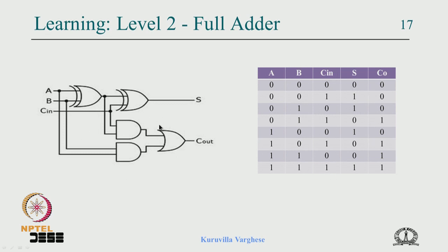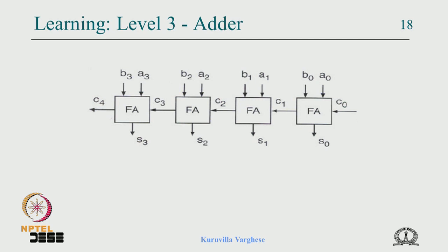At level 2, knowing the gates, you move to the full adder. The full adder has three inputs — A, B, and carry-in from a previous stage — and gives a sum and carry-out for the next stage. It is a modular adder slice that can be combined to form bigger adders. You work out the truth table, minimize, and end up with Boolean expressions. At level 3, using four full adders you build a 4-bit ripple adder, where A0 and B0 are the least significant bits and the carry-out of each stage is the carry-in of the next.